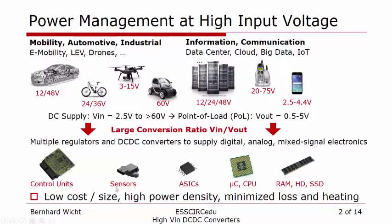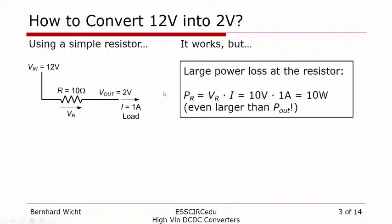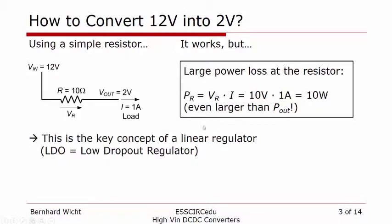We want to have low-cost solutions with small feature size on one hand, and high power efficiency on the other. Let's take a look at a simple setup: how to convert 12 volts into 2 volts. If we use a resistor and have 1 amp of load current, then a 10-ohm resistor will do the job. It works, but there are losses — the resistor burns 10 watts of power, which is larger than the output power of 2 watts. This is the concept of the linear voltage regulator, sometimes also called low dropout regulator or LDO.